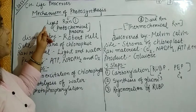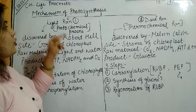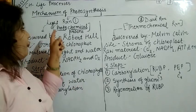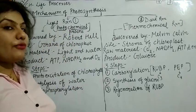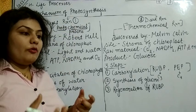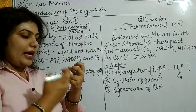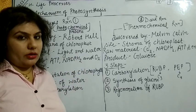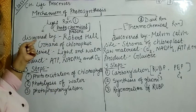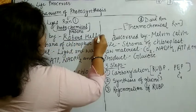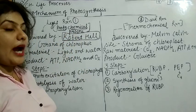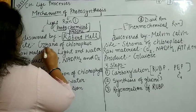In the first step, that is the light reaction, it is also known as the photochemical process. Why is it known as photochemical? Photo means light, chemical means your chemicals — in which light is activating your chemicals to work. That's why it is known as the photochemical process. This process was discovered by Robert Hill, and where does this process take place? In the grana of the chloroplast.